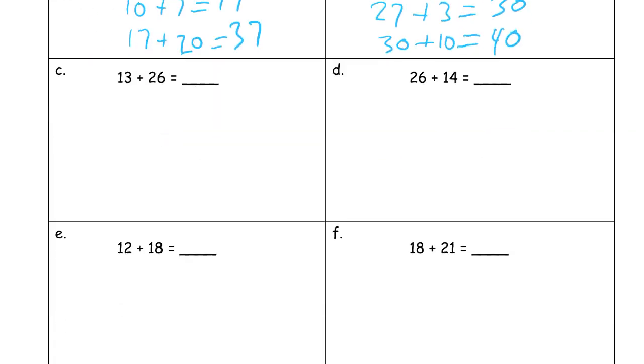13 plus 26. This is going to be 10 and 3. So it's 26 plus 3. That's 29. 26, 27, 28, 29. And then add the 10. You might find that one easier.